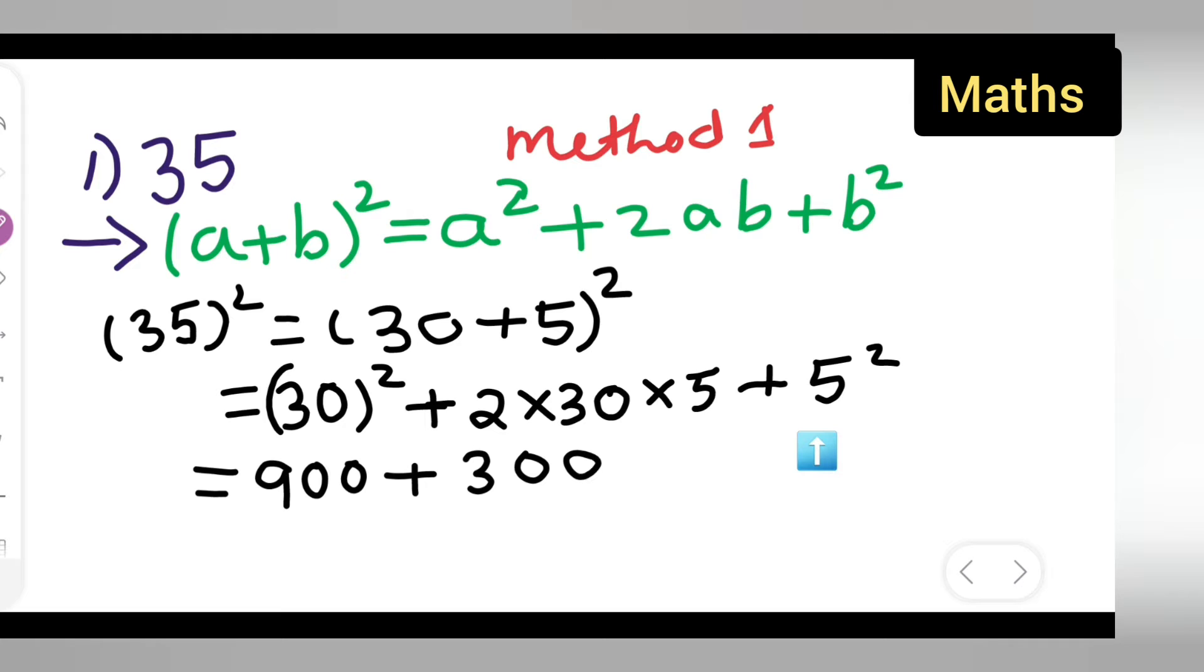Plus 5² = 25. Now add these numbers and see what you get: 900 + 300 + 25. Adding, you get 5, 2, then 9+3 = 12, so 1225.